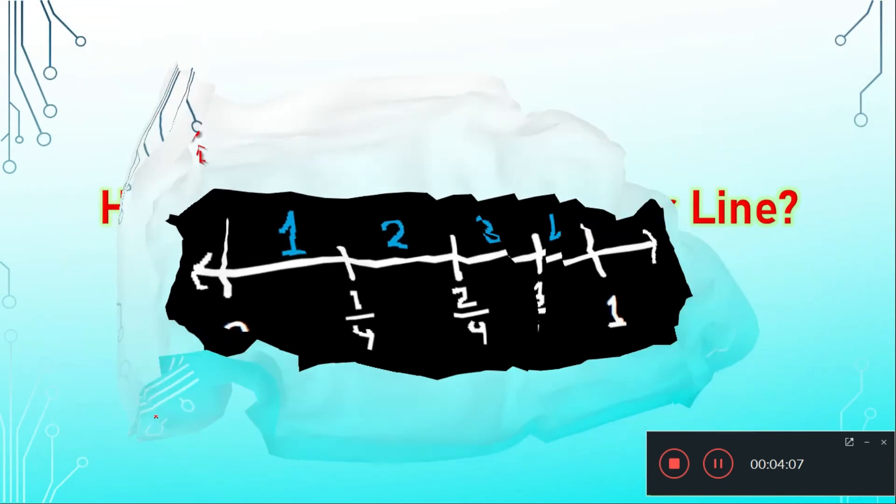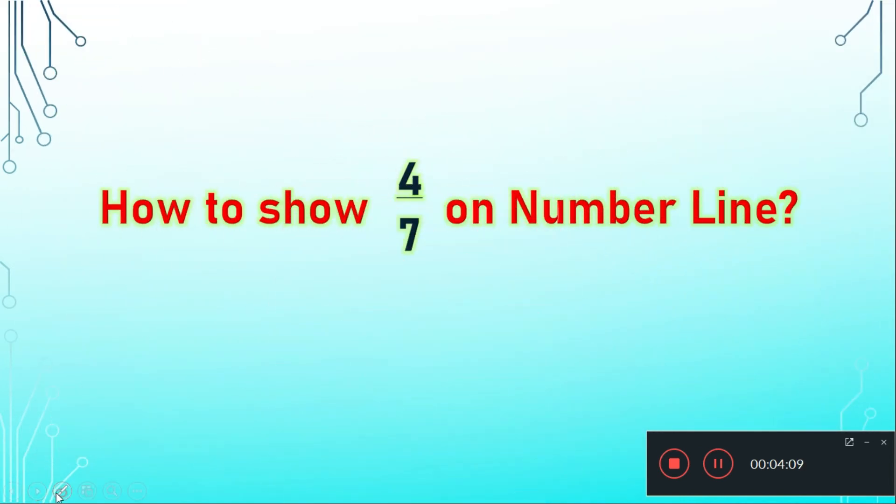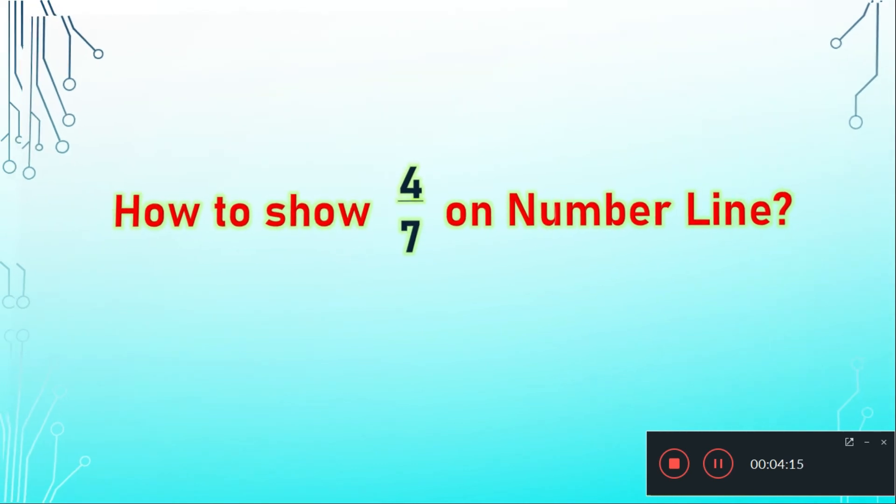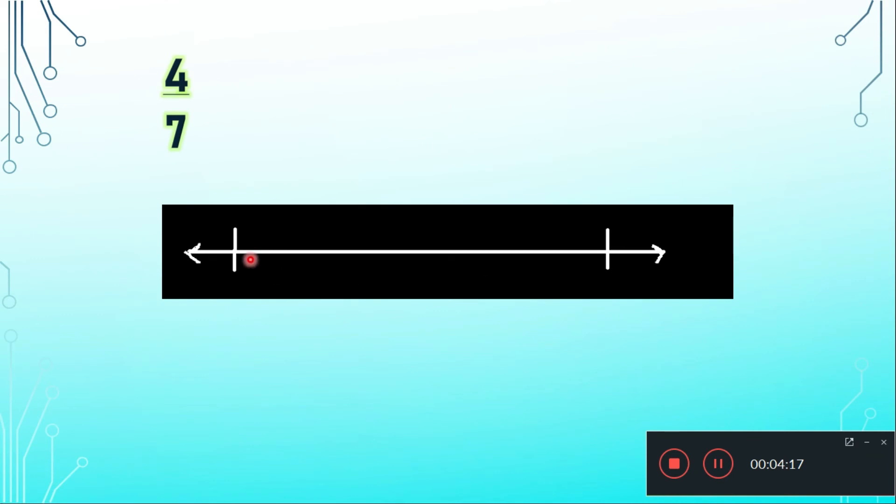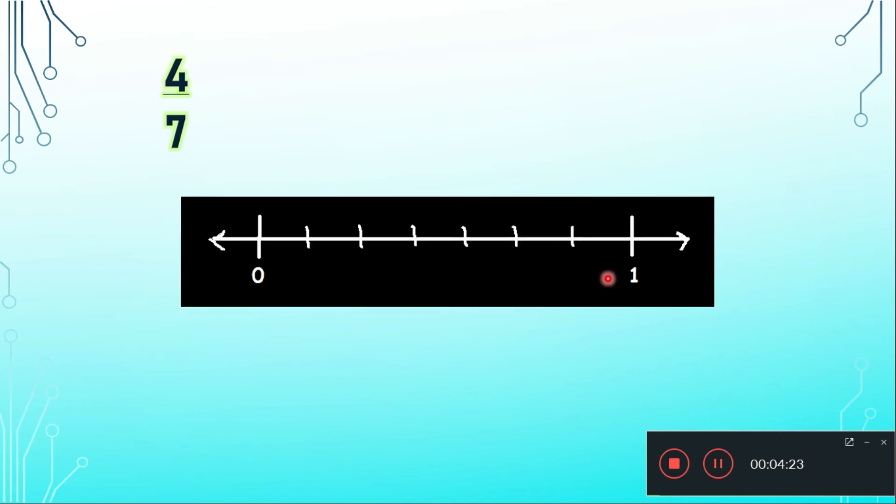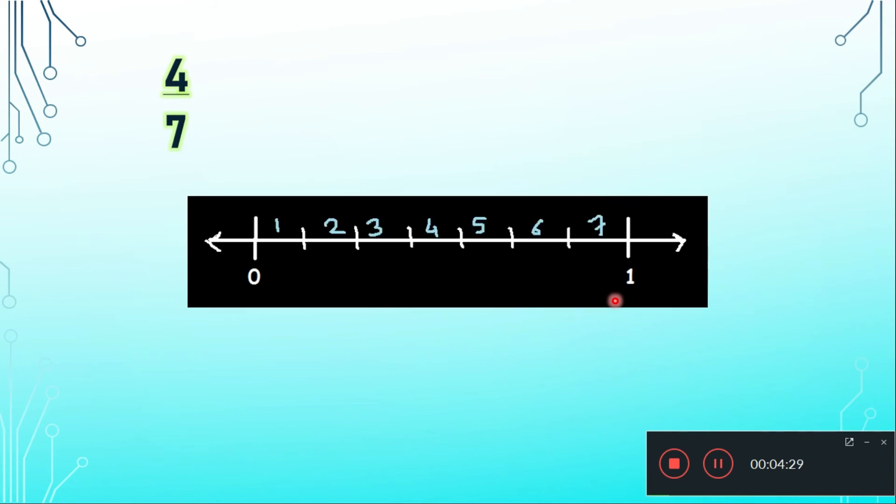Now let us see the next example. How to show 4 by 7 on the number line? Again I am drawing a number line like this, and here I will consider this point as 0 and this point as 1. Now we will divide this whole number line into 7 equal parts as we have 7 is the denominator.